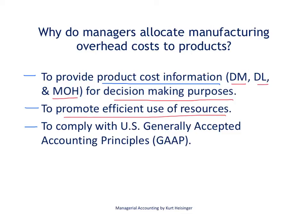The third reason that managers allocate manufacturing overhead costs to products is to comply with GAAP. Generally accepted accounting principles state that direct material costs, direct labor costs, and manufacturing overhead costs must be attached to products and go into inventory accounts as part of the inventory costing process. So GAAP does require that overhead costs are allocated to products.